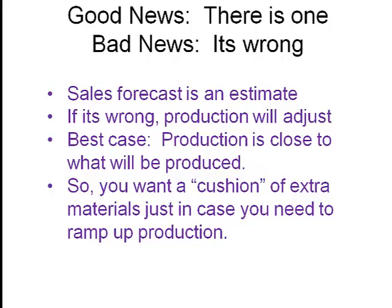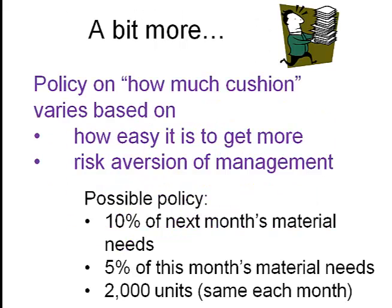So either they'll slow down or they'll speed up production. In order to be sure you have the materials you need, you need a little cushion in case production speeds up. How much they need on hand depends on how easy it is to get more and how risk-averse management is. So the policy about how much to have depends on how easy it is to get. What's important to remember is that the cushion needed for raw materials will not be the same as the cushion desired for finished goods.